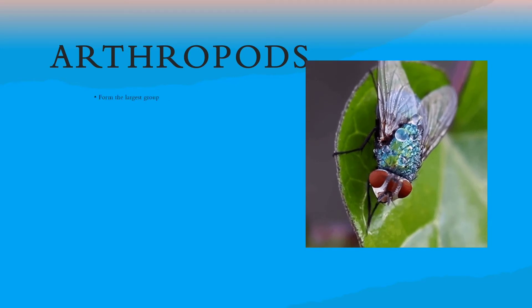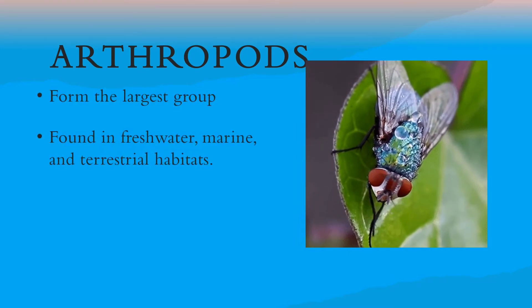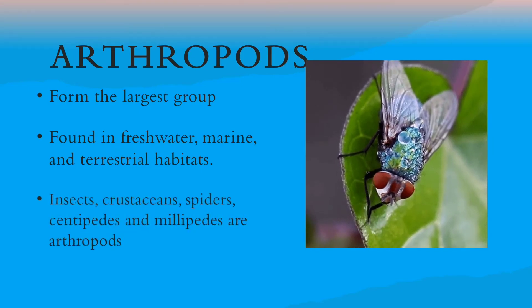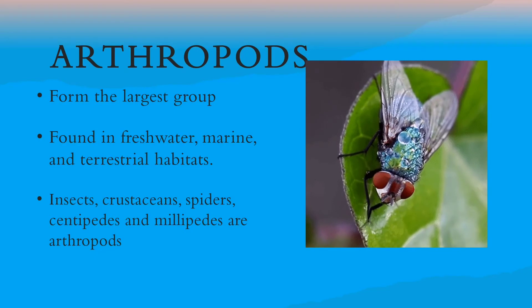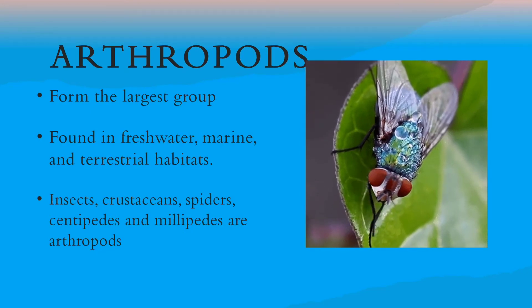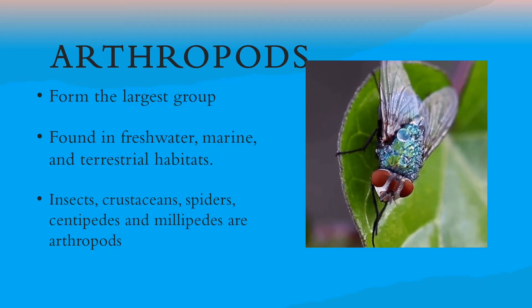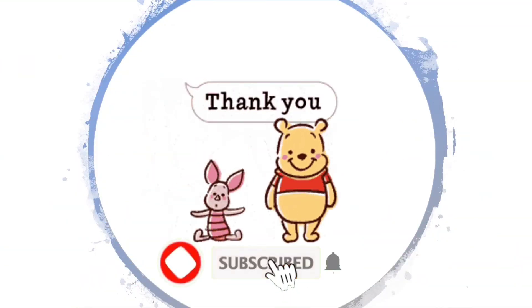Arthropods form the largest group of any animals. They are found in freshwater, marine, and terrestrial habitats. Insects, crustaceans, spiders, centipedes, and millipedes are arthropods. Arthropods have a hard outer body covering called an exoskeleton.